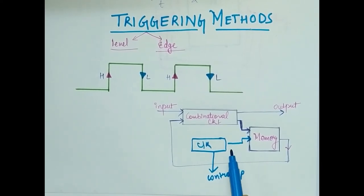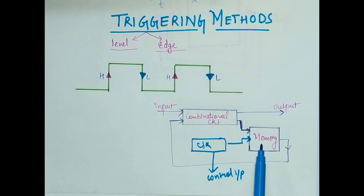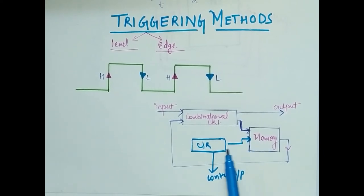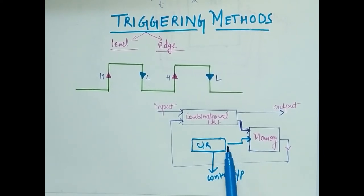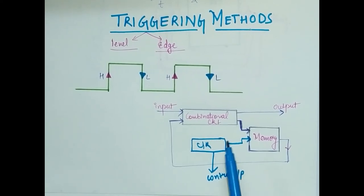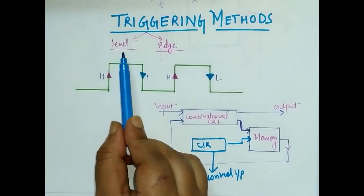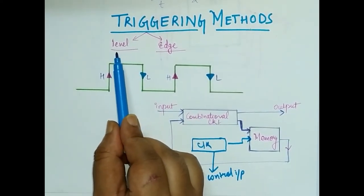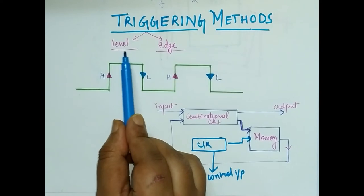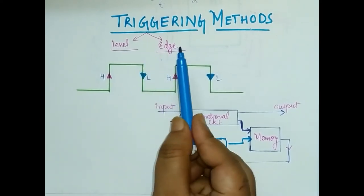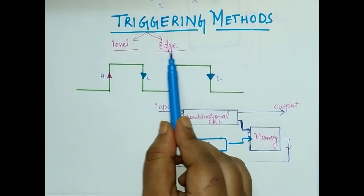So in what way can we trigger this clock signal to the memory circuit? This triggering process can be done by different methods. Basically there are two types of triggering techniques: one is level triggering and the other one is edge triggering.